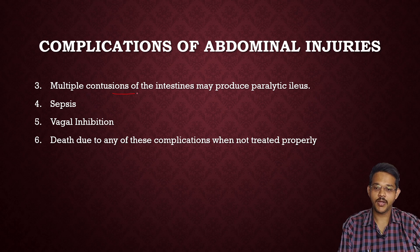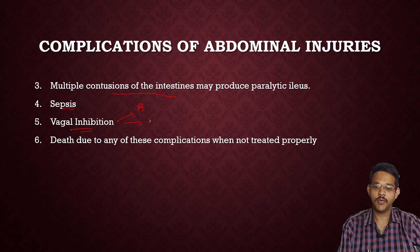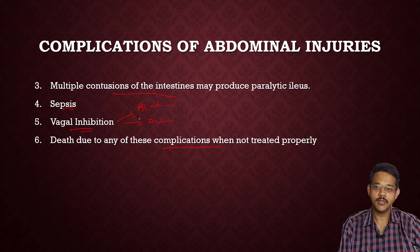Multiple contusions of the intestine can produce paralytic ileus, where functions of the small intestine are paralyzed. There may be septicemia — generalized infection of the body — due to infections caused by contusions and lacerations. Vagal inhibition may occur if there is rupture of the bladder or evacuation of the abdominal cavity, stimulating the vagus nerve and leading to stoppage of the heart. Death may also result when the above injuries are not treated properly.